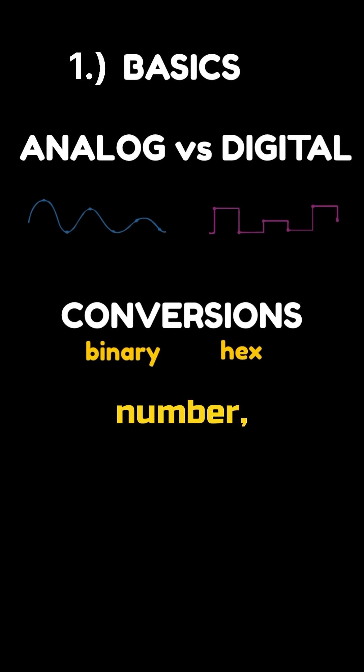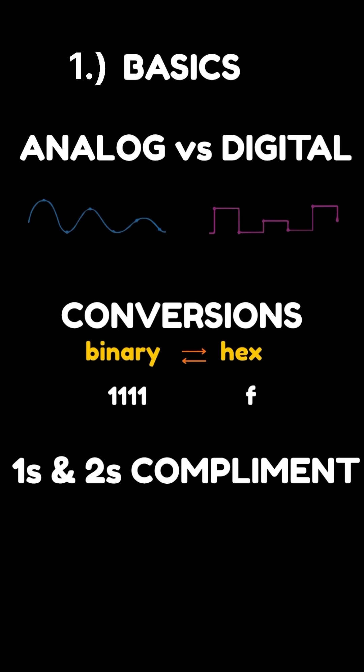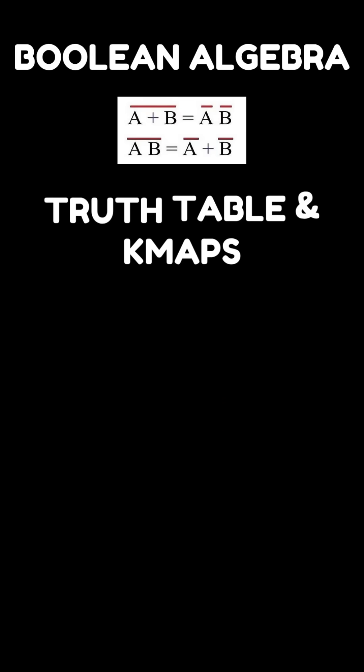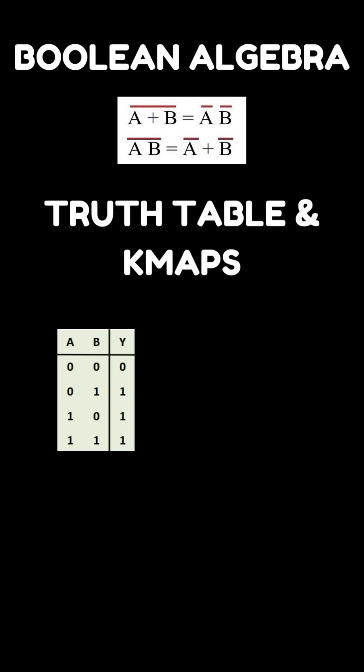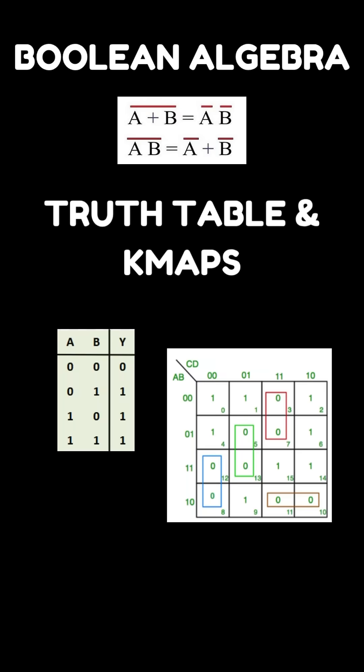If you look at any binary number, you should know the hexadecimal equivalent and vice versa. Know one's and two's complements. Then finish off Boolean algebra — know all the rules, especially De Morgan's law. Get comfortable writing truth tables and K-maps.